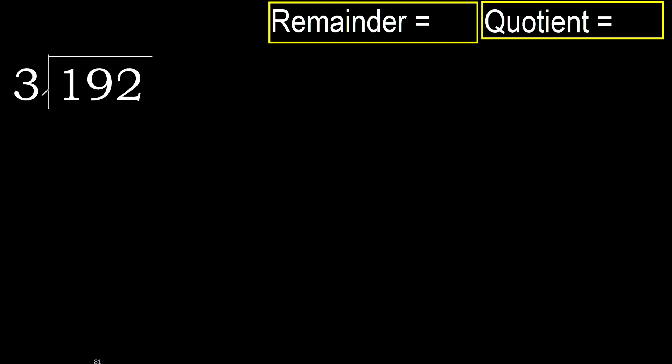192 divided by 3. 1 is less, therefore next. 19 is not less,